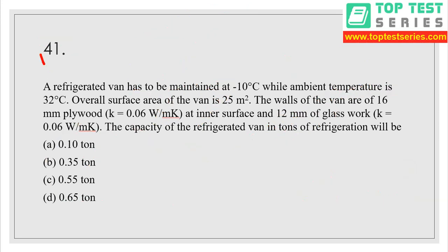So guys, let's get started with question number 41. A refrigerated van has to be maintained at minus 10 degrees centigrade while ambient temperature is 32 degrees centigrade. Overall surface area of the van is 25 meters square.